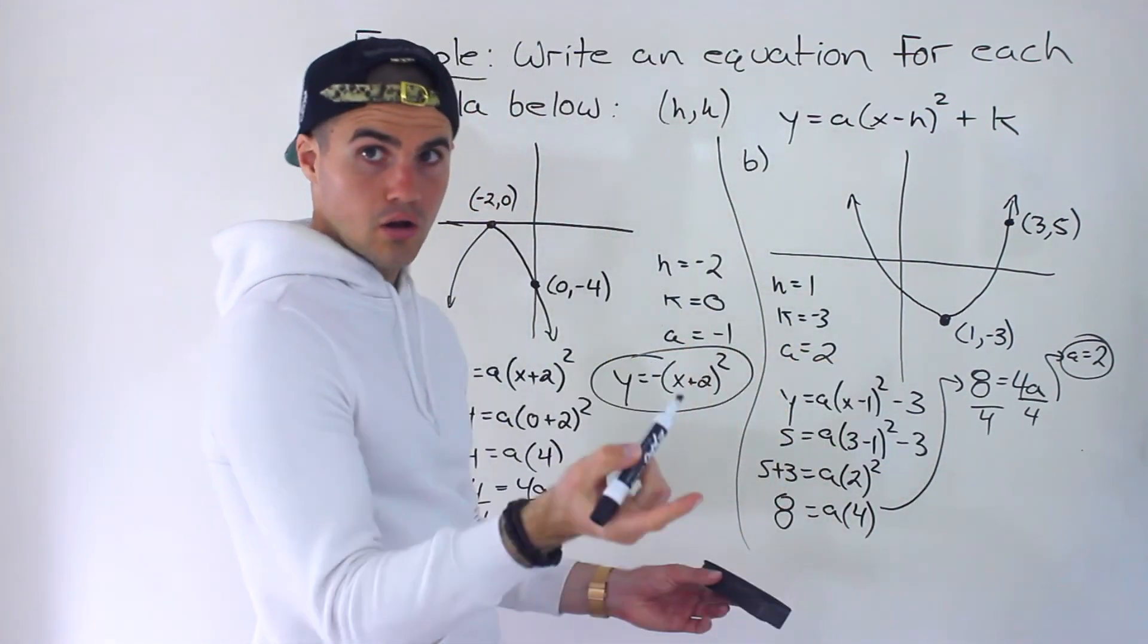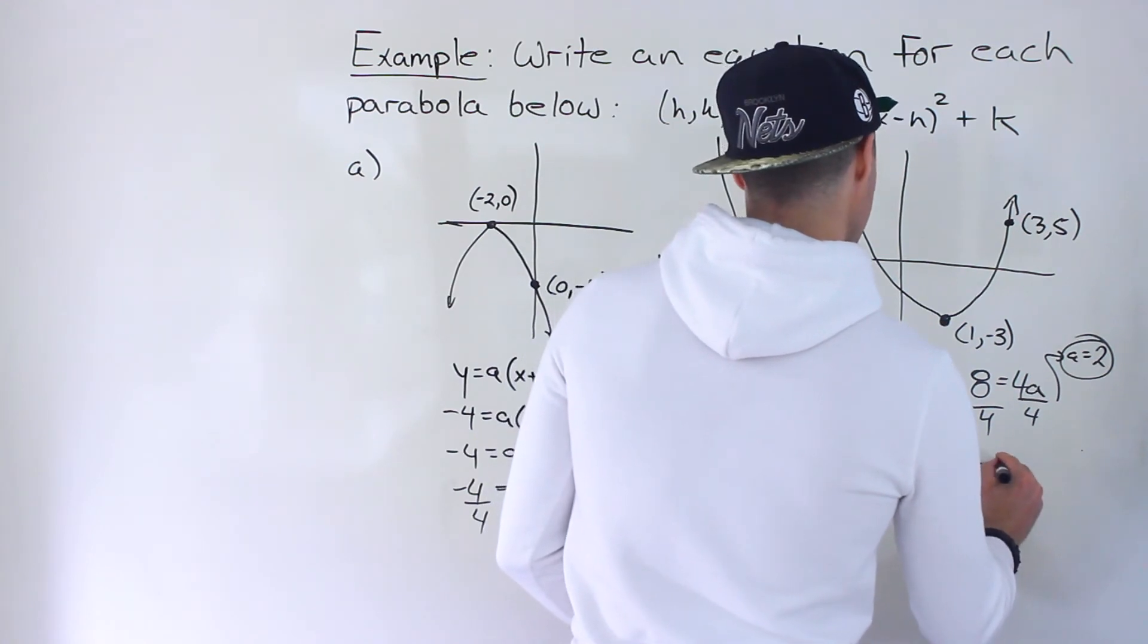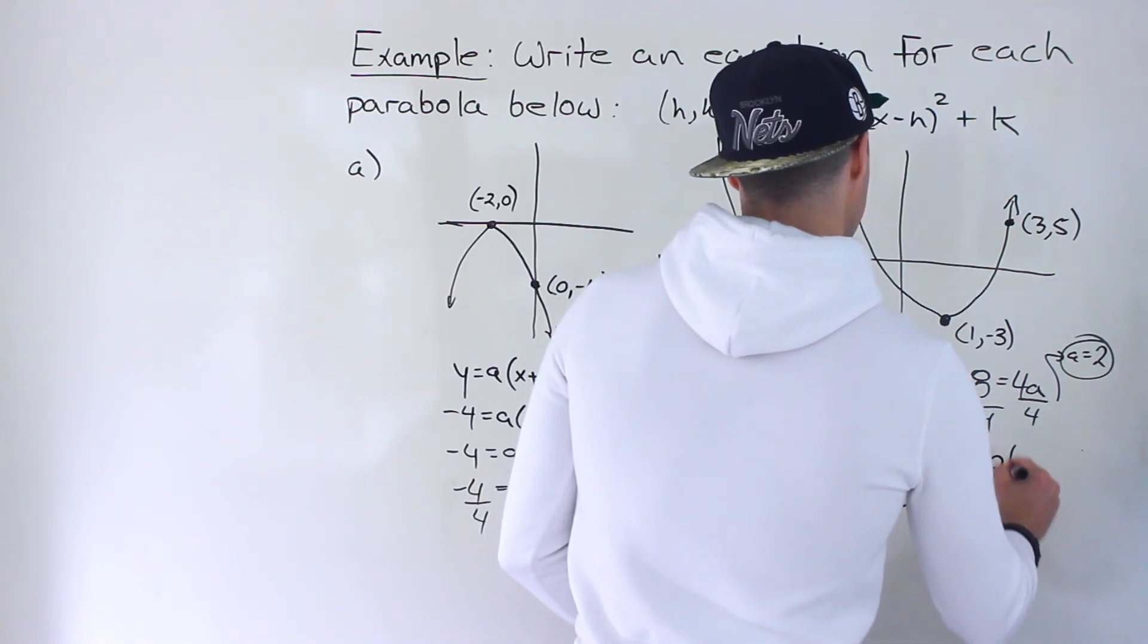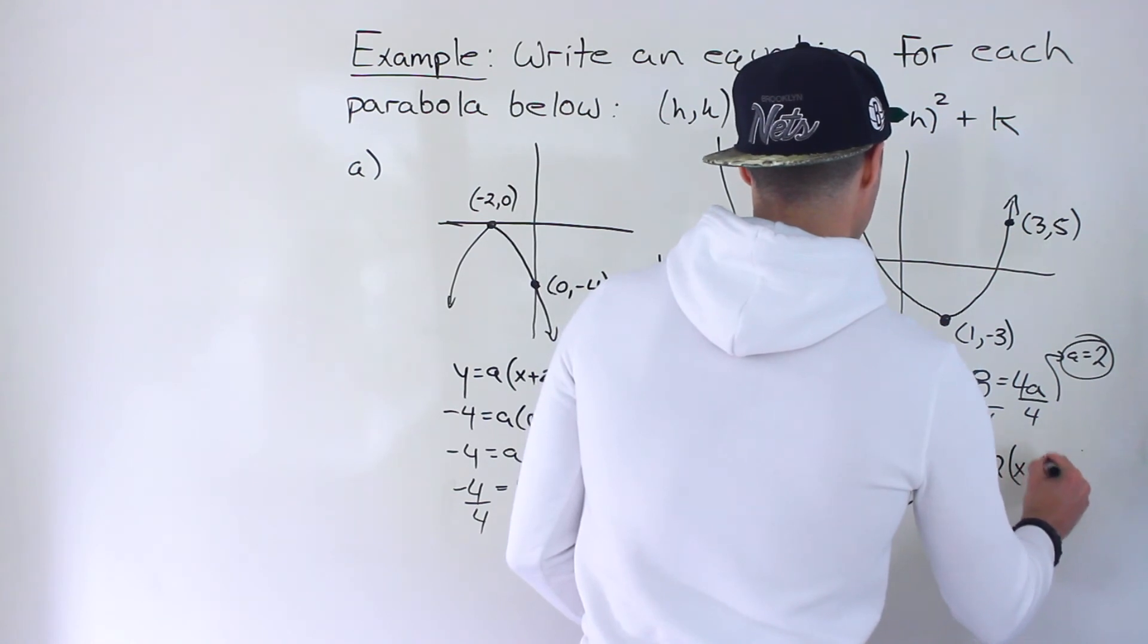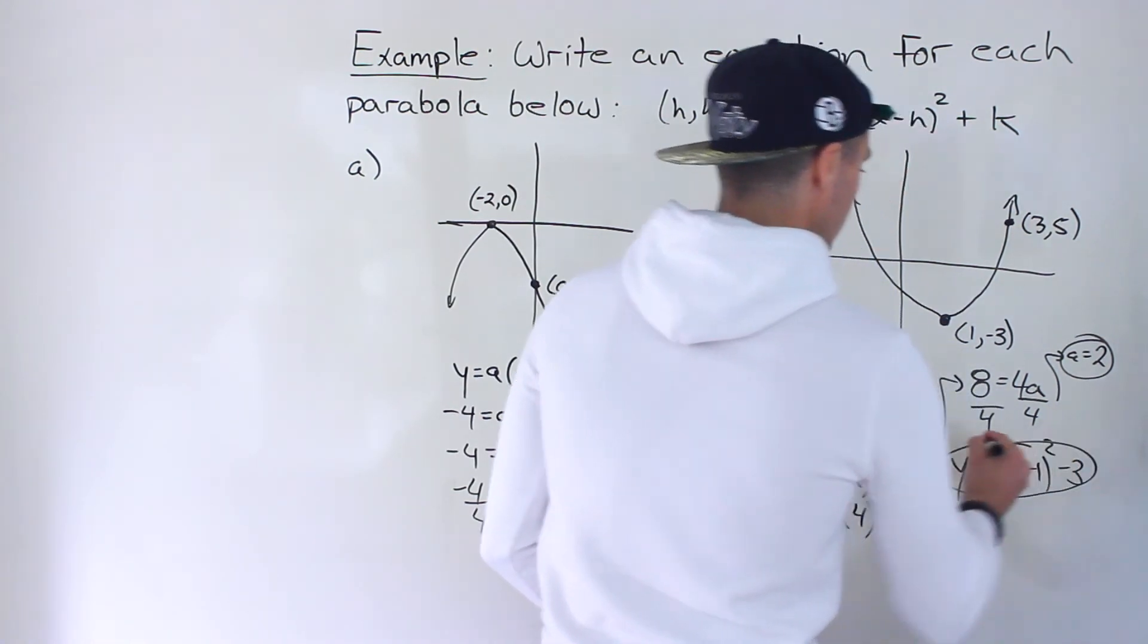All right. So we got all of our transformation values. And so the final equation ends up being two x minus one squared minus three. Like that.